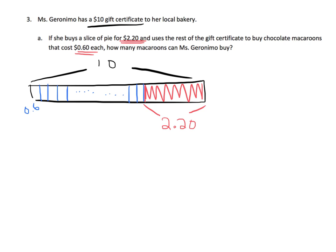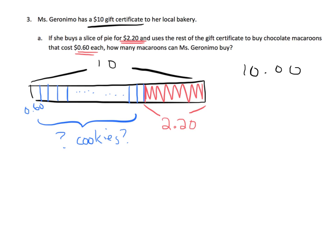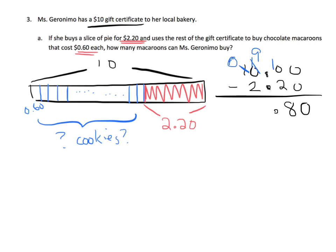So how many 60 cents could there be — how many cookies? First we have to subtract. We're going to do $10.00 minus $2.20. Teachers and parents, you may have to do some review on lining up the decimal and lining up the ones place, tens place, tenths, and hundredths. Then we subtract and we get $7.80.